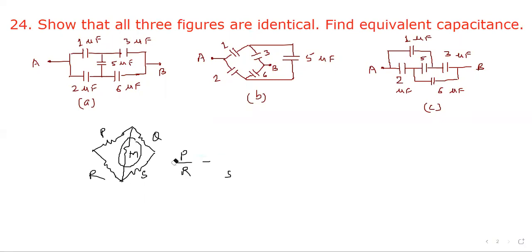In this case what do we observe? Here, 1 upon 2 equal to 3 upon 6. So this 5 microfarad capacitor will be removed and then circuit will look like 1, 3, 2, and 6.